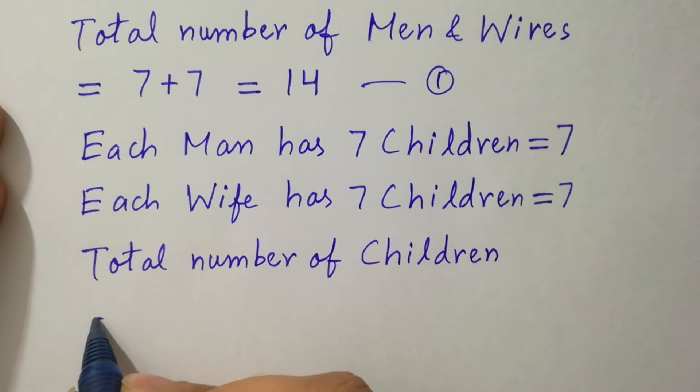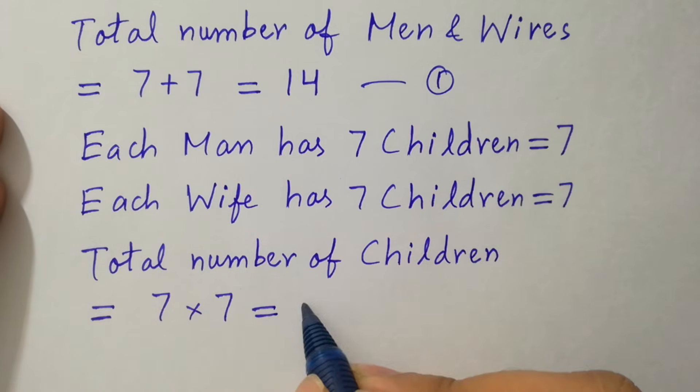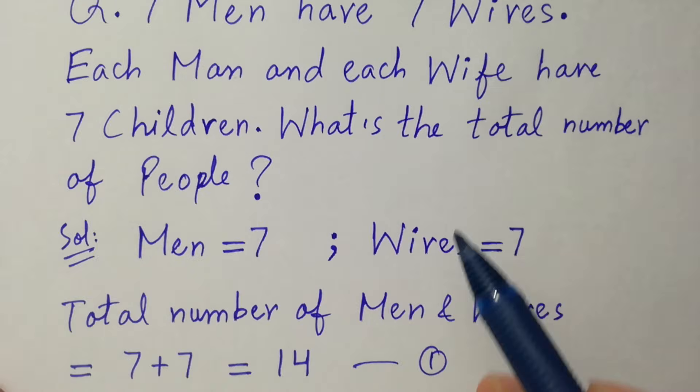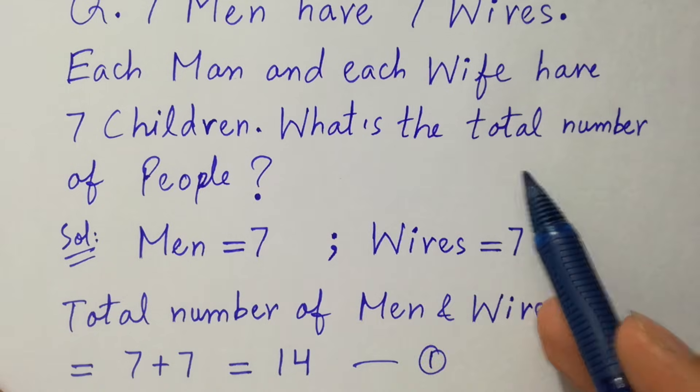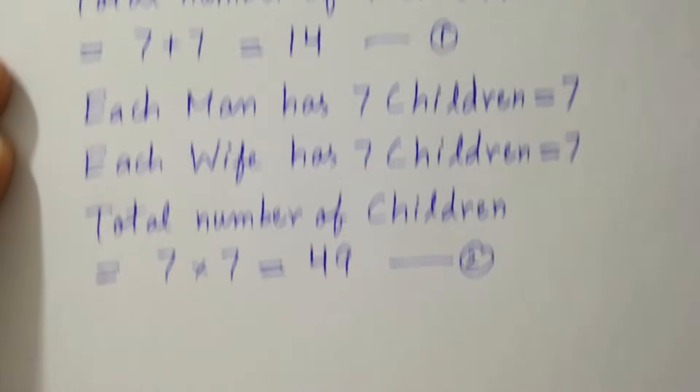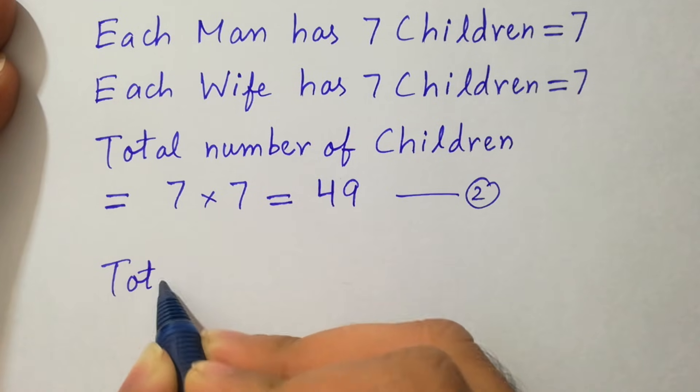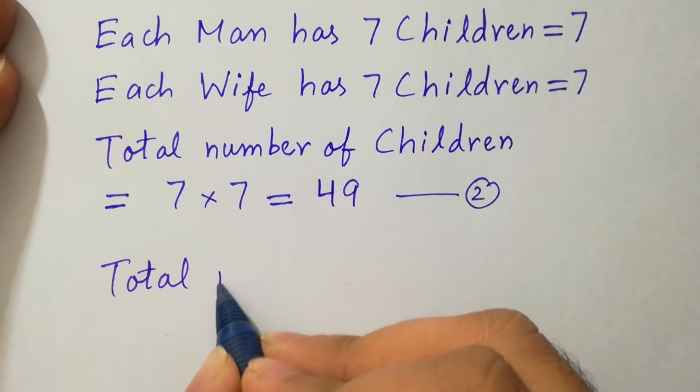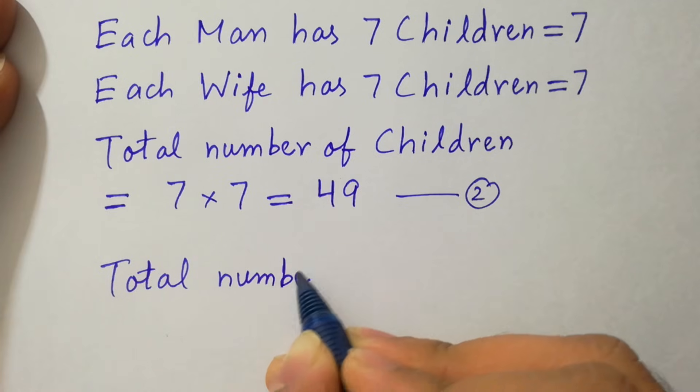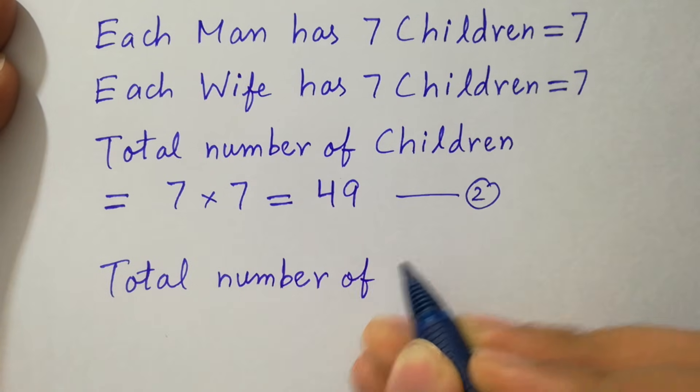Say this is second equation. Now see the third line. What's the total number of people? Total number of people can be get by adding first and second equation.